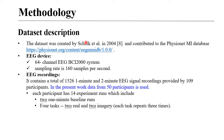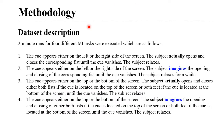The dataset used was created by Schalk et al. in 2004 and contributed to the PhysioNet MI database. The EEG device used was from the BCI2000 system with 64 channels and a sampling rate of 160 samples per second. EEG recordings were made from 109 participants, but in this work we used data from 50 participants, each with 14 experimental runs — two baseline and four tasks (two real and two imaginary).